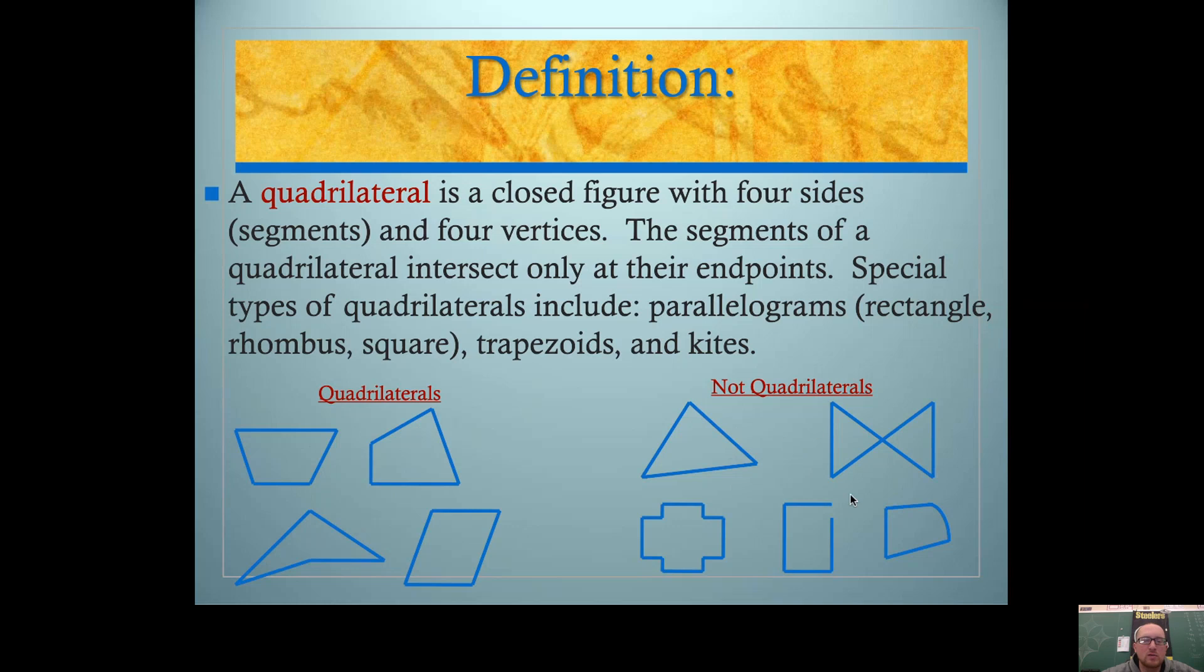These ones are not quadrilaterals. This one isn't closed. This is not a segment. There's a lot of segments here, way more than four. There's only three segments here. These segments cross each other. So the segments of a quadrilateral intersect only at their endpoints, so that's why this guy isn't a quadrilateral.